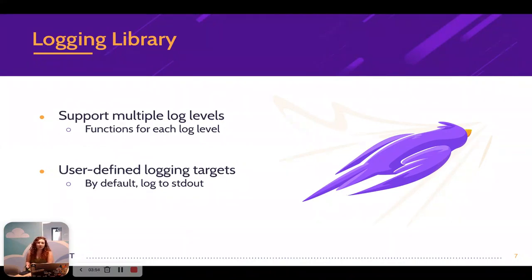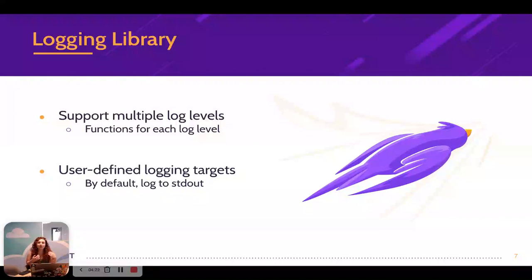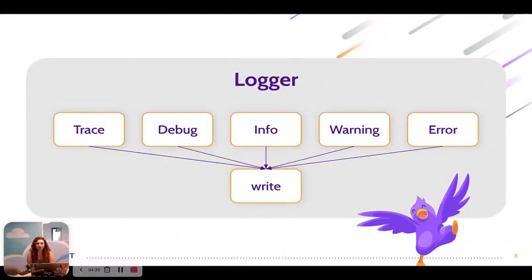We're going to take the example of a logging library. Just as I did, we're going to translate that logging library from Java to Go and see where common mistakes and pitfalls can happen. Our logging library has two main requirements: we need to support multiple log levels with a function for each, and we're going to want user-defined logging targets. By default we log to stdout, but users can log to a file, socket, or anywhere they want.